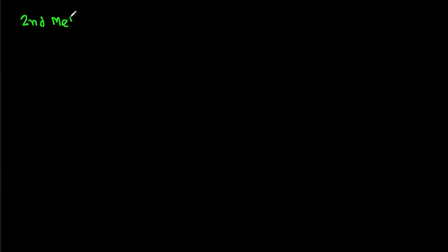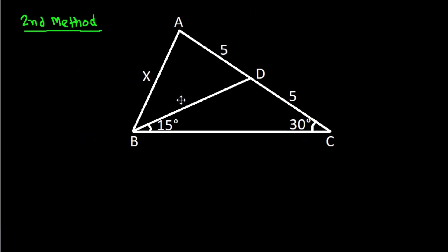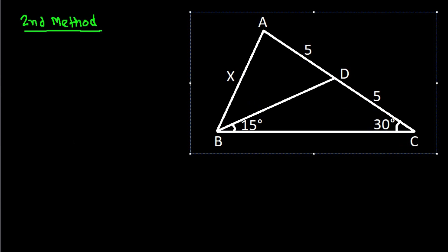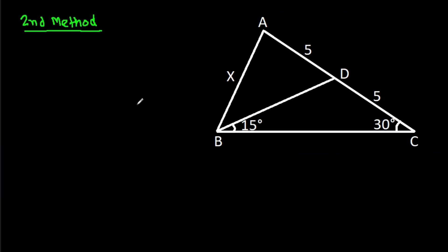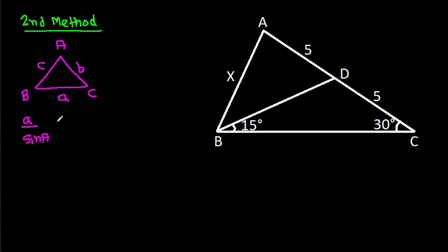This is the second method. In any triangle ABC, if BC is side a, AC is side b, and AB is side c, then by the sine rule: a divided by sin A equals b divided by sin B equals c divided by sin C.